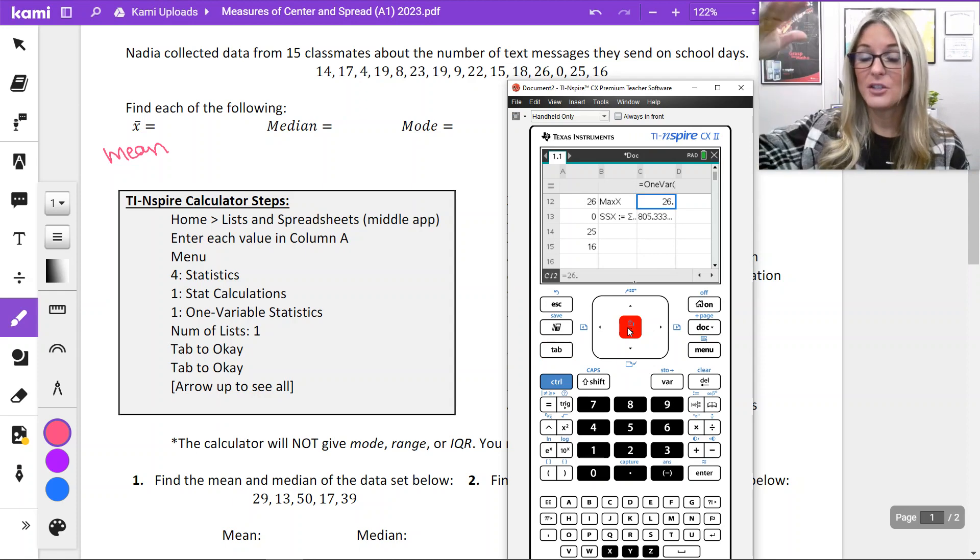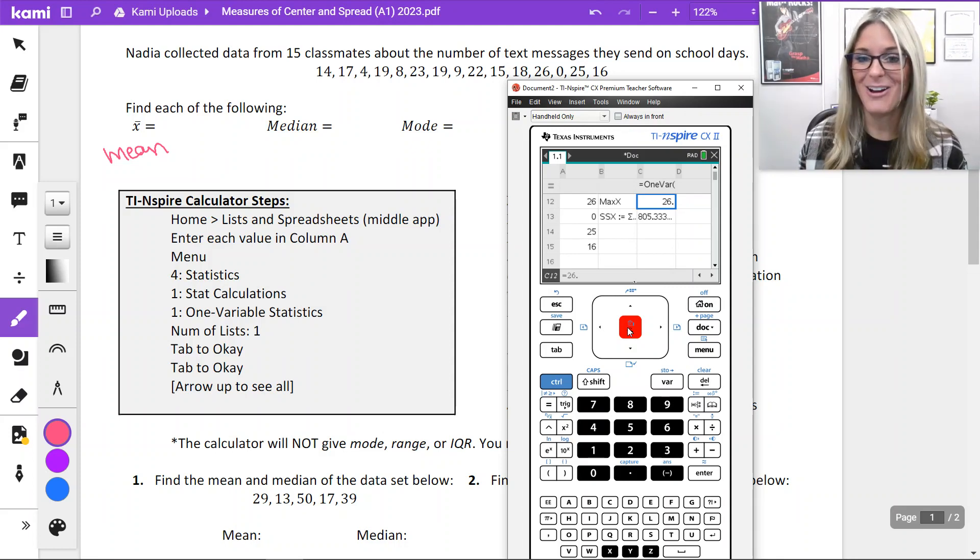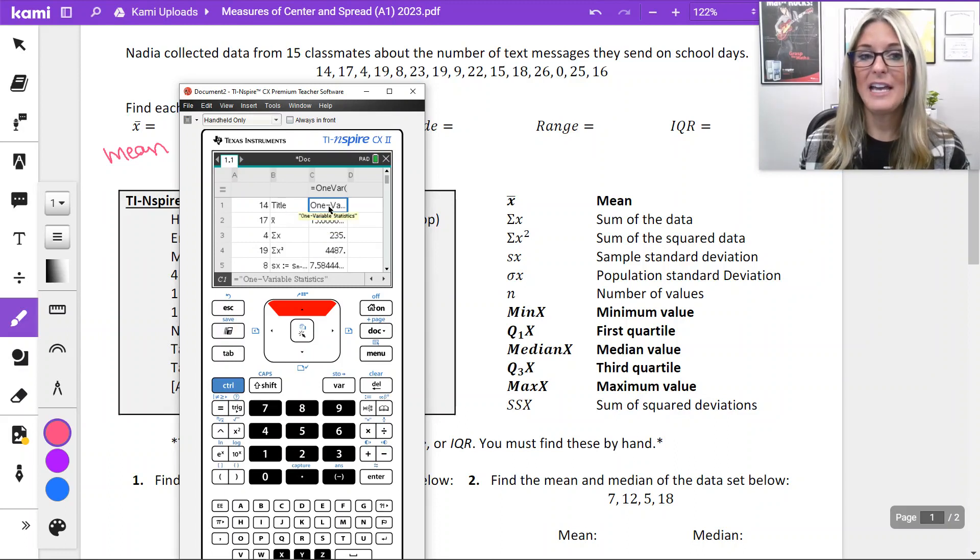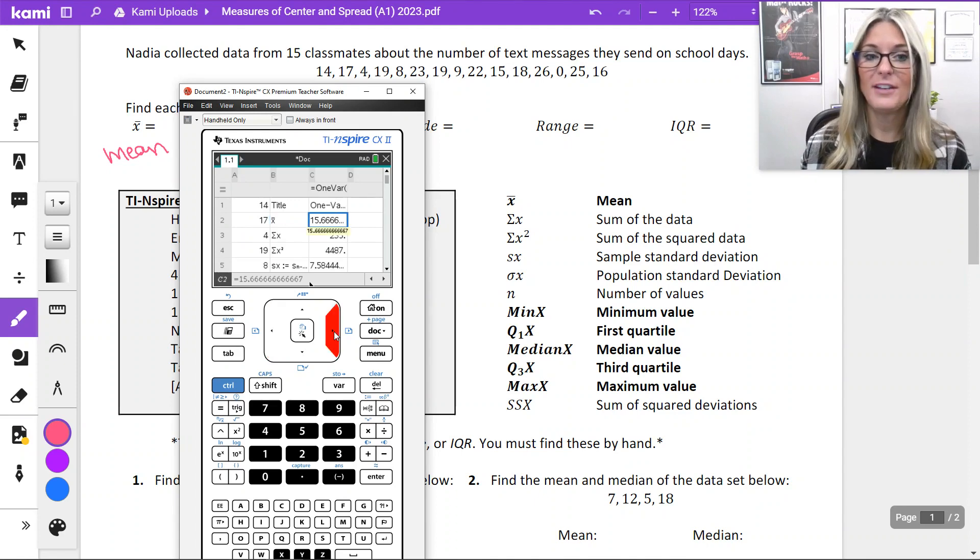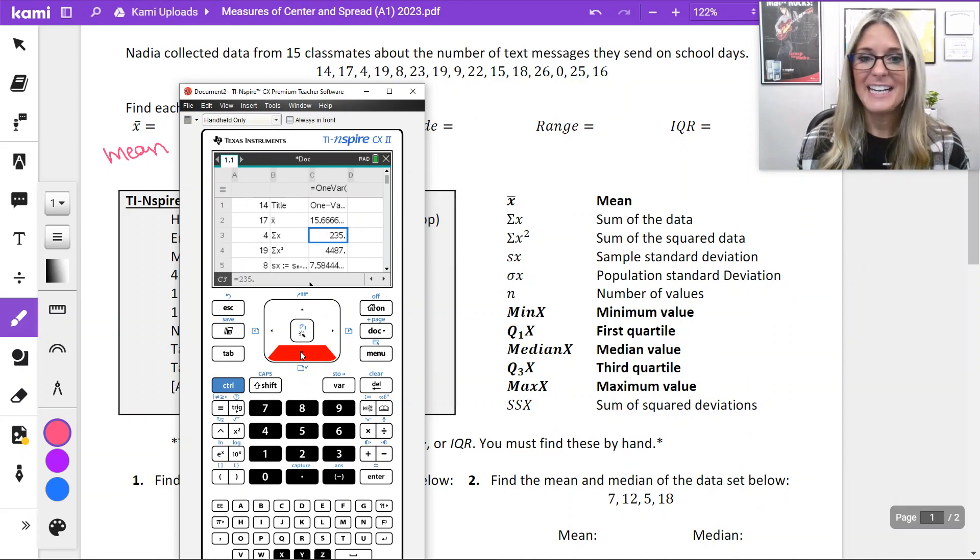And you're going to have a list of statistical values here right beside your data. Arrow up to see all of it. This is the very end of it. Keep arrowing up. And you can see we've got a lot more information. At the top, it starts with one variable statistics. X with the bar over it, that's our mean. And for this problem, the mean is 15.666 repeating. If I can't see it all in the little cell box there on the spreadsheet, look, it is listed at the very bottom, C2 equals 15.666.